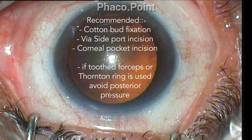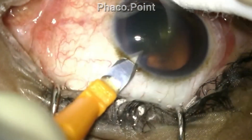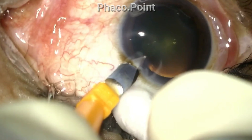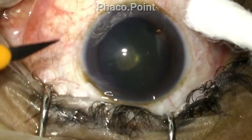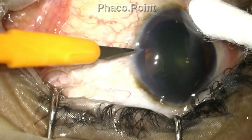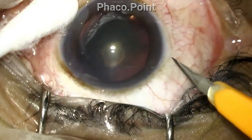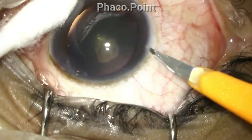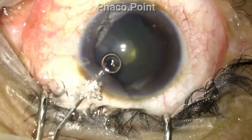If you use tooth forceps or a Thornton fixation ring, make sure the hold is superficial and you do not press deeply onto the eye. The cotton bud can be used when the eyeball surface is dry — use counter-traction to initiate the incision, then shift the position adjacent to it. However, if the patient has a prominent Bell's phenomenon and tends to squeeze the eye, the cotton bud will not be sufficient.